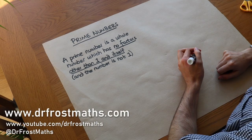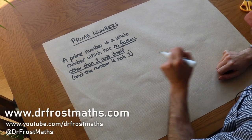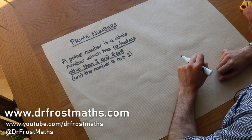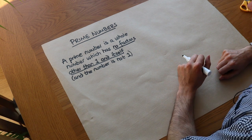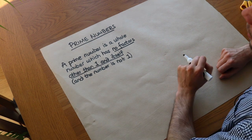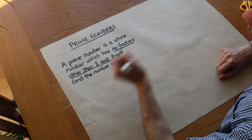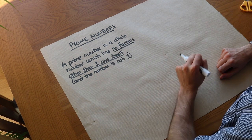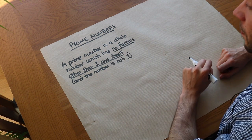Hello and welcome to this video on prime numbers. I'm presuming you are already familiar with factors — if not, I recommend watching the video on that first. A factor is a number that goes into, or divides into, something. For example, two is a factor of eight because eight can be divided by two.